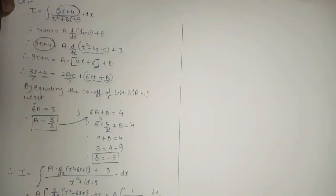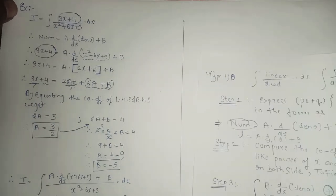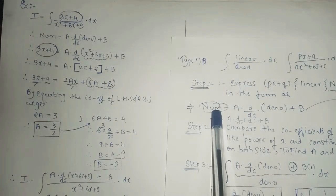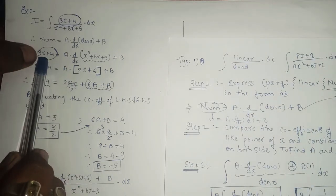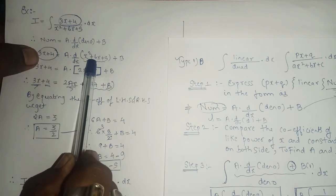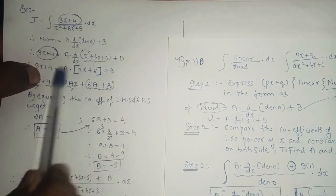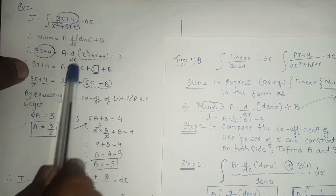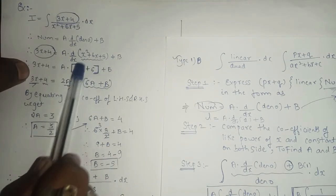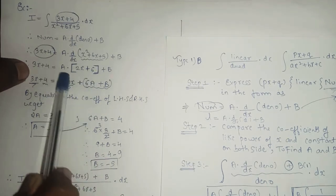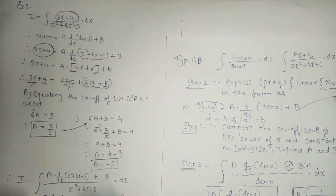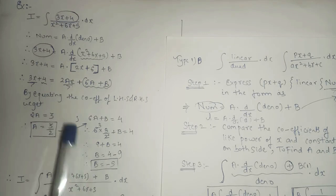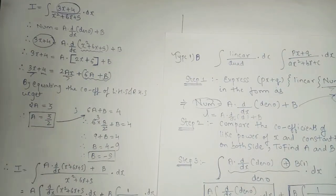To recap the steps: step one — express numerator as A times derivative of denominator plus B. Numerator was 3x plus 4, denominator was x squared plus 6x plus 5. Find the derivative, which gives 2x plus 6. Then expand and balance the equation. Step two — equate coefficients to get A equals 3 over 2 and B equals minus 5.